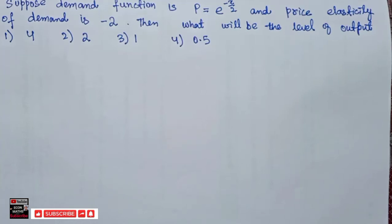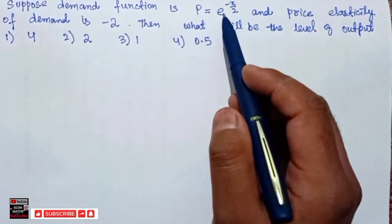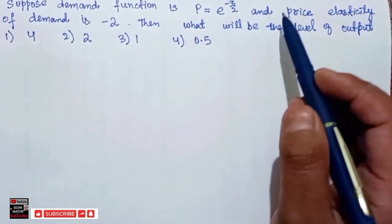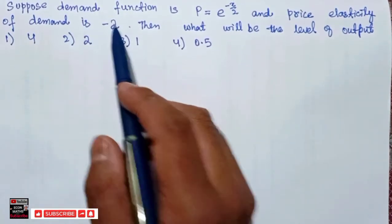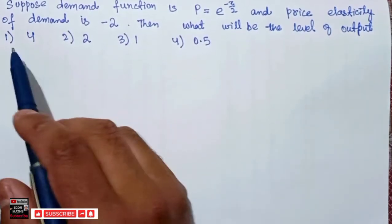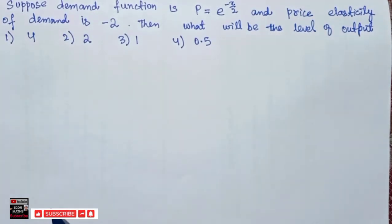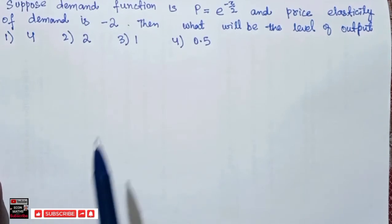Hi, this is Halal. In this video we will try to solve a numerical that was asked by a brother. The question is: suppose a demand function is p equal to e to the power minus x divided by 2, where p is the price and x is the quantity. Price elasticity of demand is also given, which is minus 2. Then what will be the level of output? The options are 4, 2, 1, and 0.5.